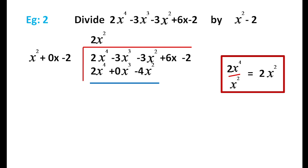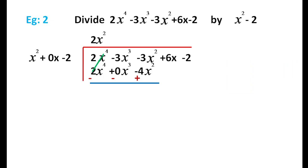We change signs: plus becomes minus, minus becomes plus. After subtracting 2x⁴ minus 2x⁴ cancels. Then minus 3x³ plus 0x³ gives minus 3x³. Minus 3x² plus 4x² gives plus x². We bring down plus 6x. So the new dividend portion is minus 3x³ plus x² plus 6x.